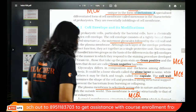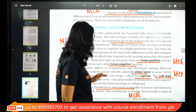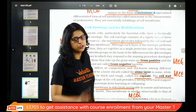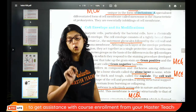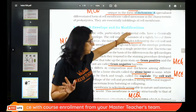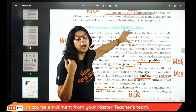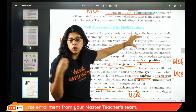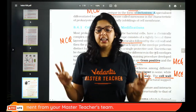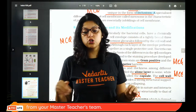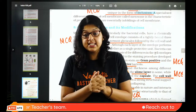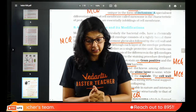Glycocalyx forms the capsule, which is the outer cover. It is in the form of a slime layer that helps bacteria colonize. When glycocalyx is very loose it is a slime layer; when it is thick and tough it is a capsule. Cell wall determines the shape of the cell.